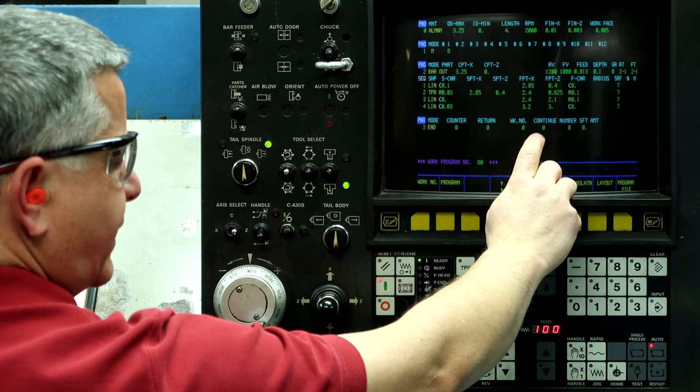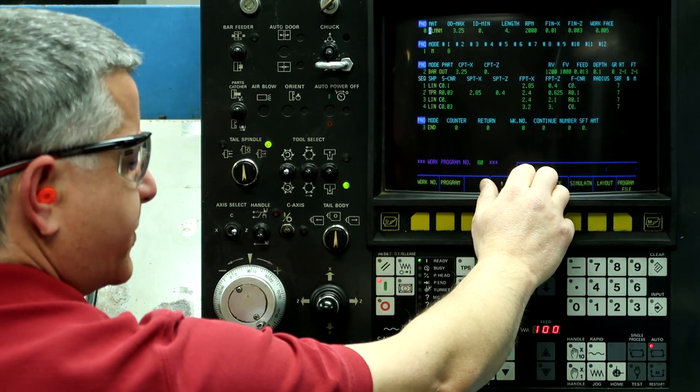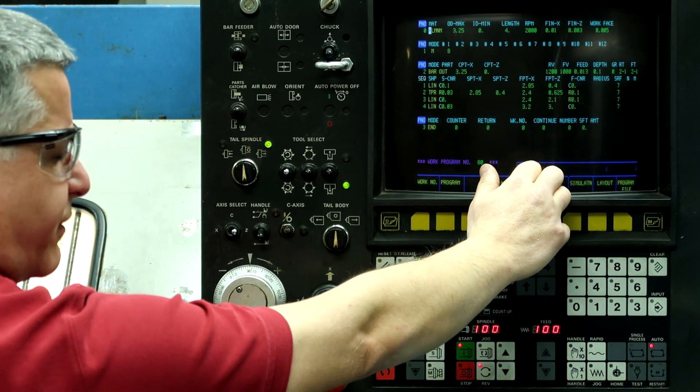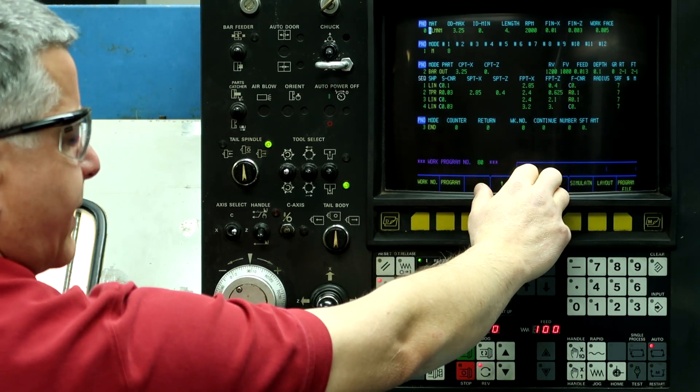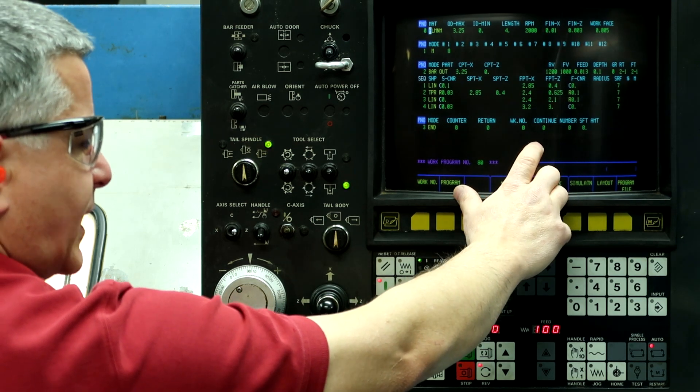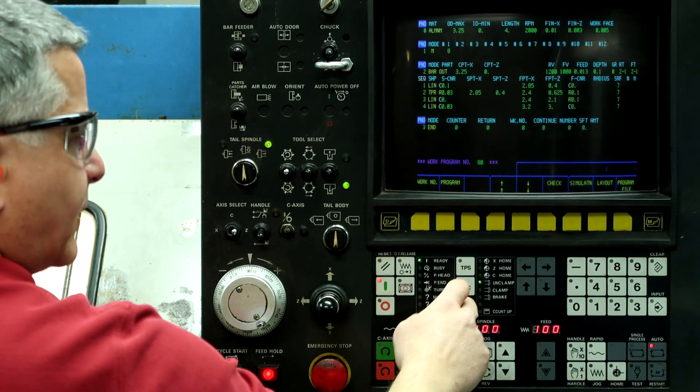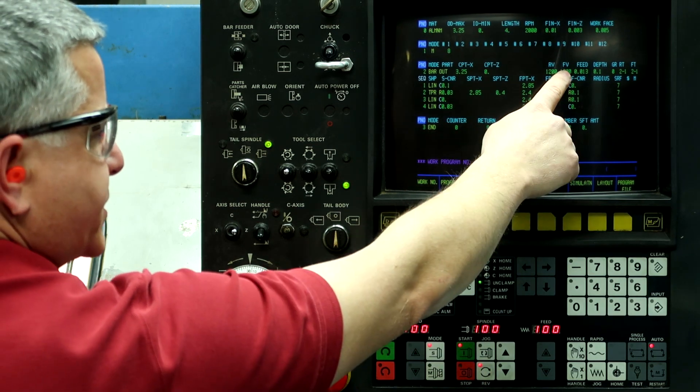So this is needed. When we do the auto feeds and speeds, those are based on conservative values and it may not break a chip. So adjust the feeds and speeds on the fly and then push the VFC button and then it's going to reprogram the machine.